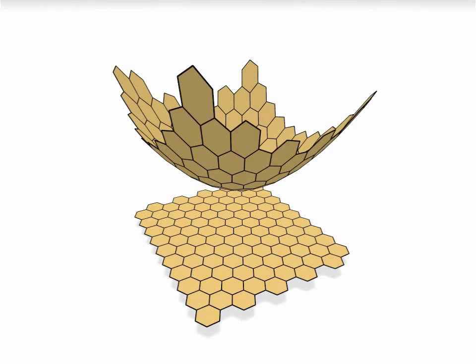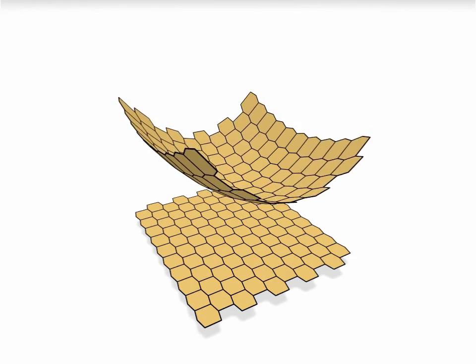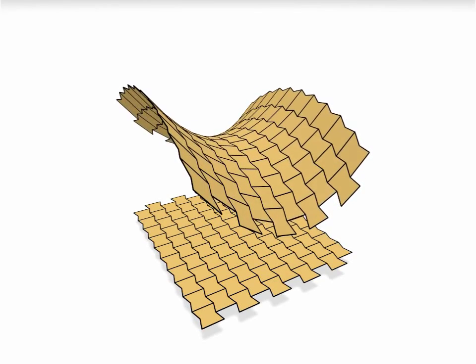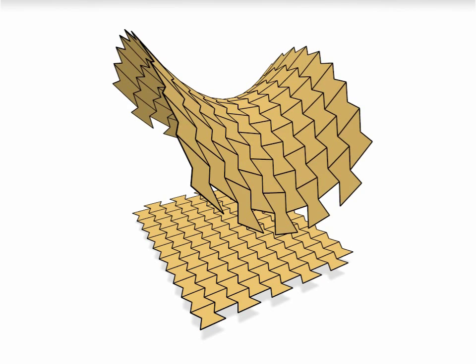Now, we show a continuous deformation of this pattern onto a paraboloid, changing its Gaussian curvature from positive to negative. Note how convex faces become concave.